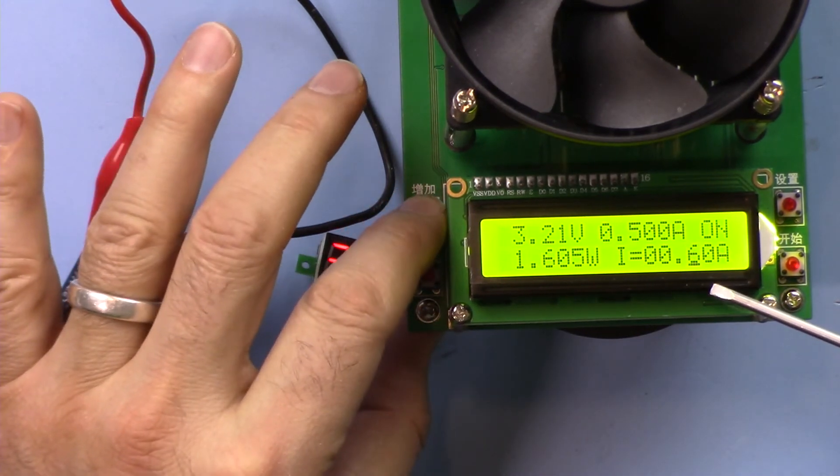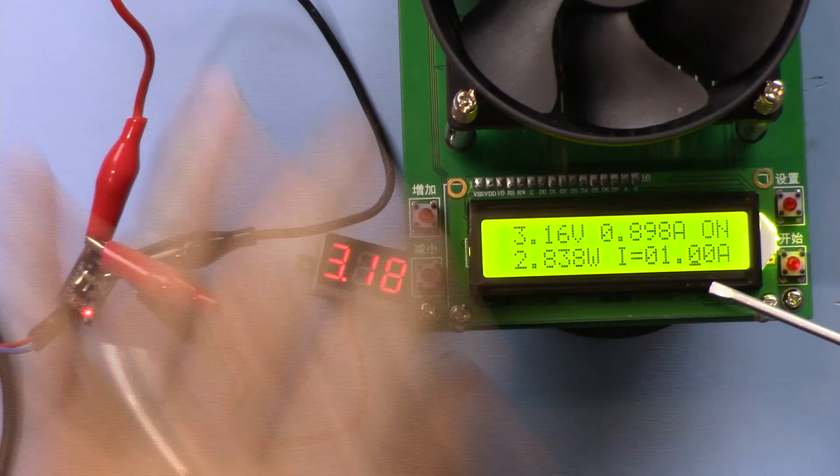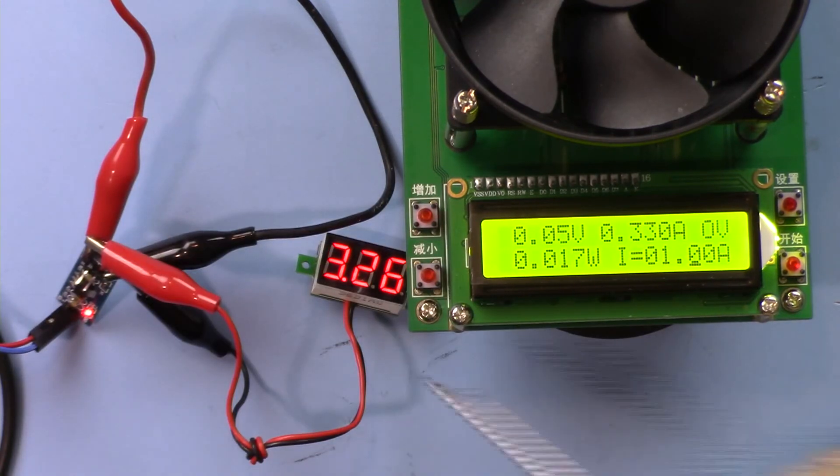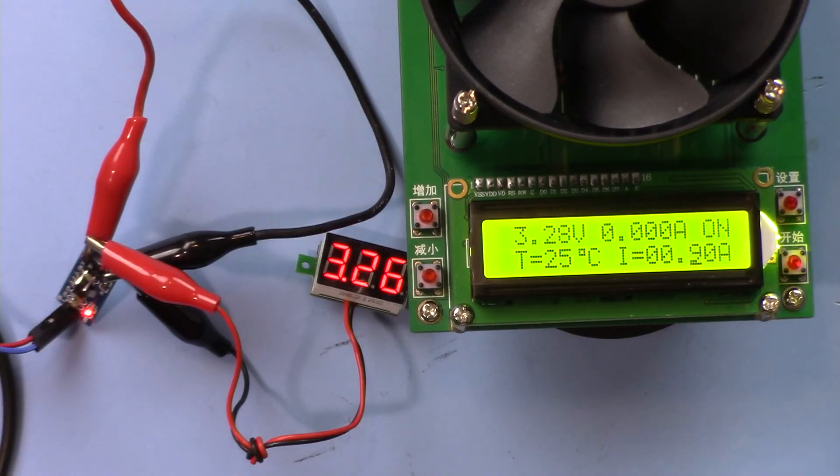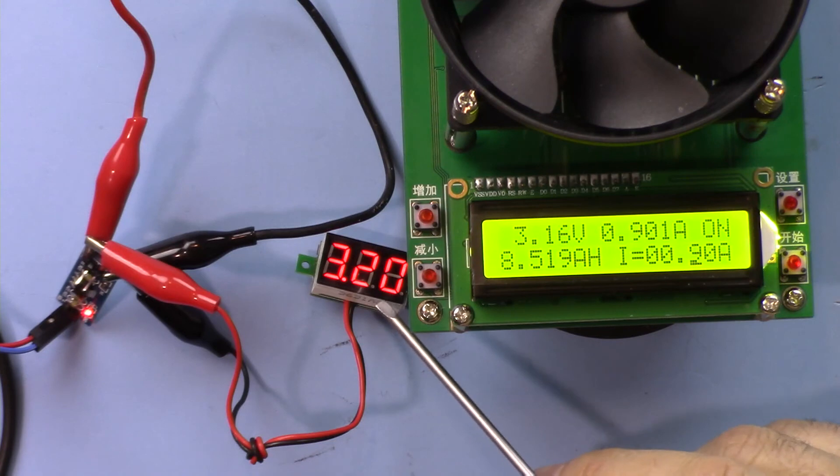Now let's just for fun increase the current. I'm making it 1, shut down. Making it 0.9, so 900 milliamps, voltage drops significantly.